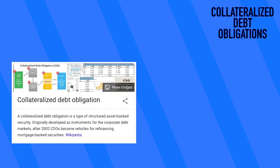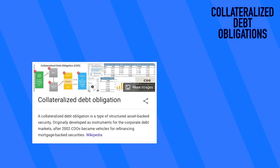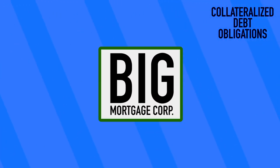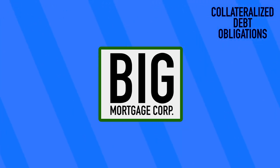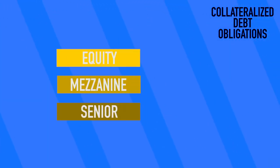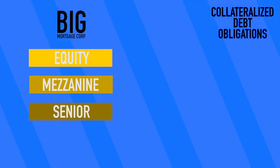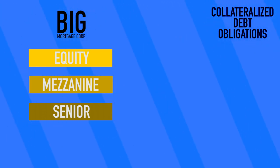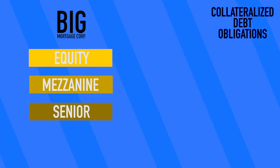CDOs are types of mortgage-backed securities. In the example we posed before, mortgage-backed securities are simple shares of a company where every share gets the same amount back. CDOs are still shares of that company, but they have different levels of how much you get back, called tranches. Let's say the investment bank wants to split Big Mortgage Corp into three tranches: equity, mezzanine, and senior. These are the actual names used in the industry. Each tranche holds a hand-picked number of shares from Big Mortgage Corp.